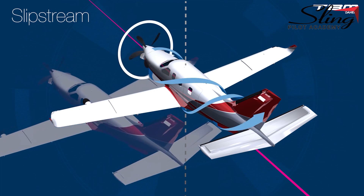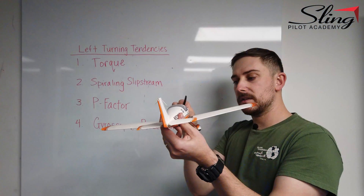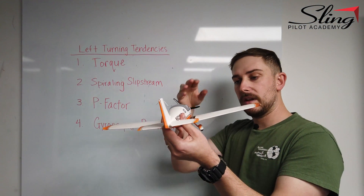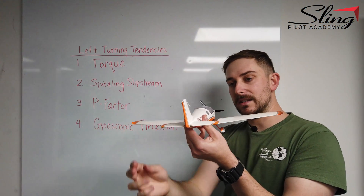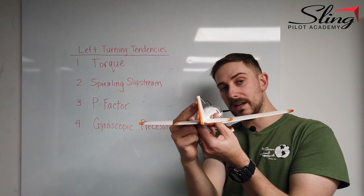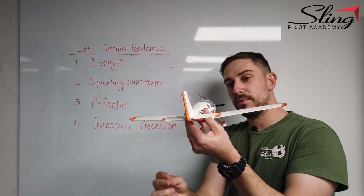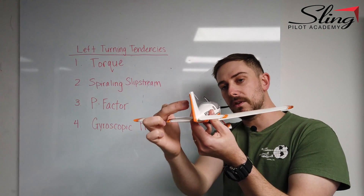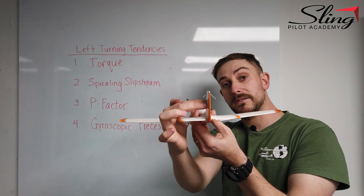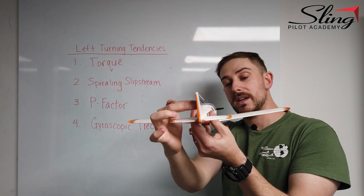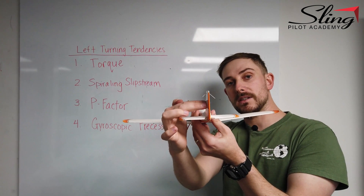That's what is called the spiraling slipstream. Because of this turning motion and the spiral it creates, as it hits the vertical stabilizer, it pushes on the back of the vertical stabilizer and creates a left turn as well. This is our second left turning tendency.